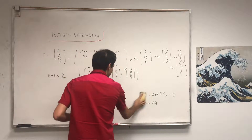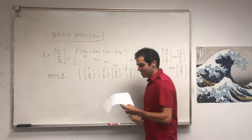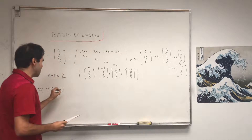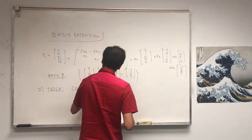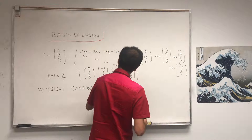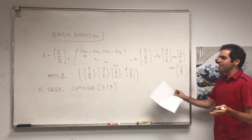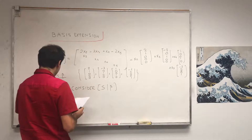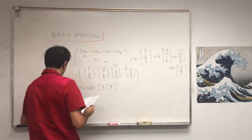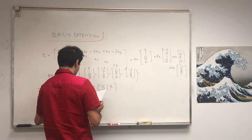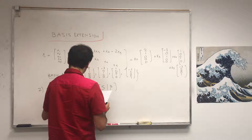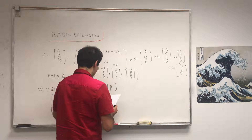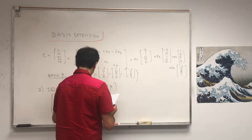The trick is to consider a big matrix whose first columns are the vectors of S, followed by the vectors of beta. So we form the matrix with first column (0, 1, 1, 1, 0) — that's S — then (2, 1, 0, 0, 0), then (-3, 0, 1, 0, 0), then (1, 0, 0, 1, 0), and finally (-2, 0, 0, 0, 1).